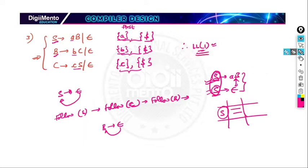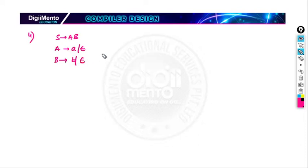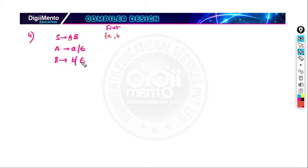Now let us see more examples. Suppose we have: S generates AB, A generates small a or epsilon, B generates small b or epsilon. First of S is FIRST of A, which is small a. Since A generates epsilon, first of S will also include FIRST of B, which is small b. Since B also generates epsilon, epsilon is included, and FOLLOW of S is dollar.